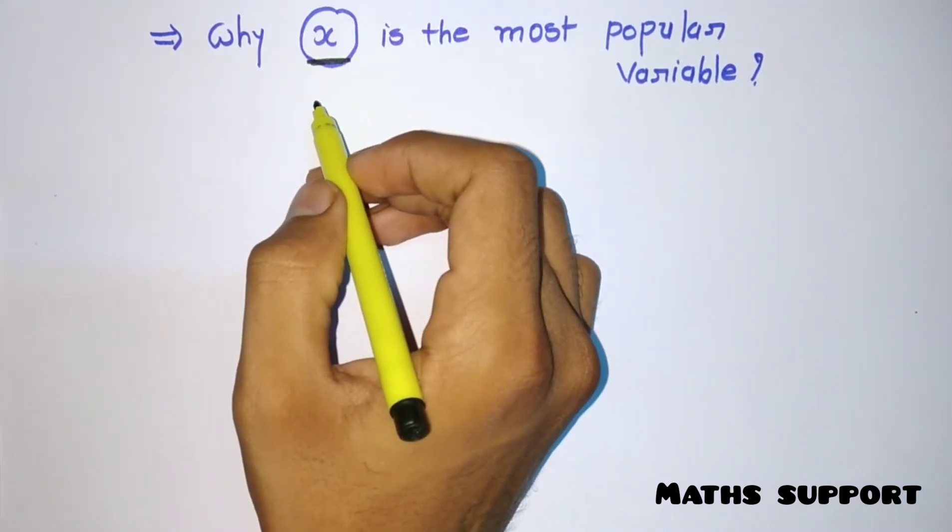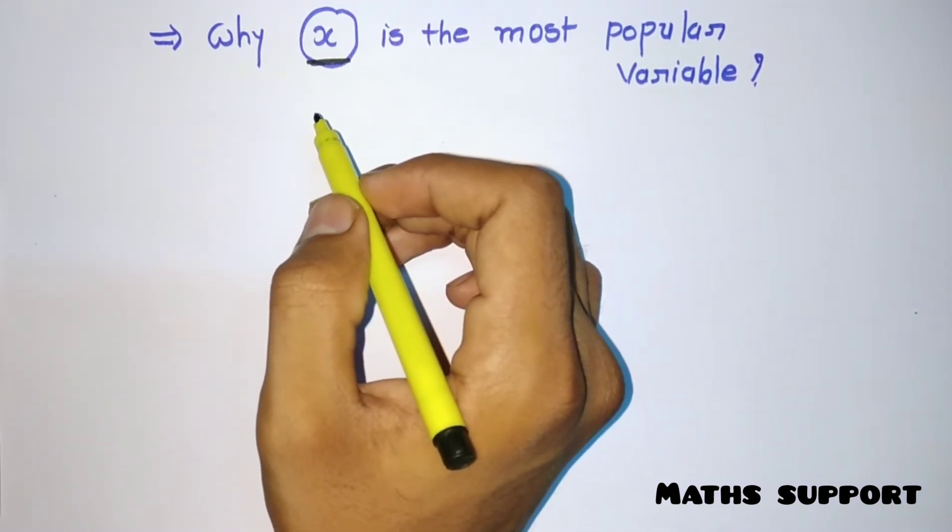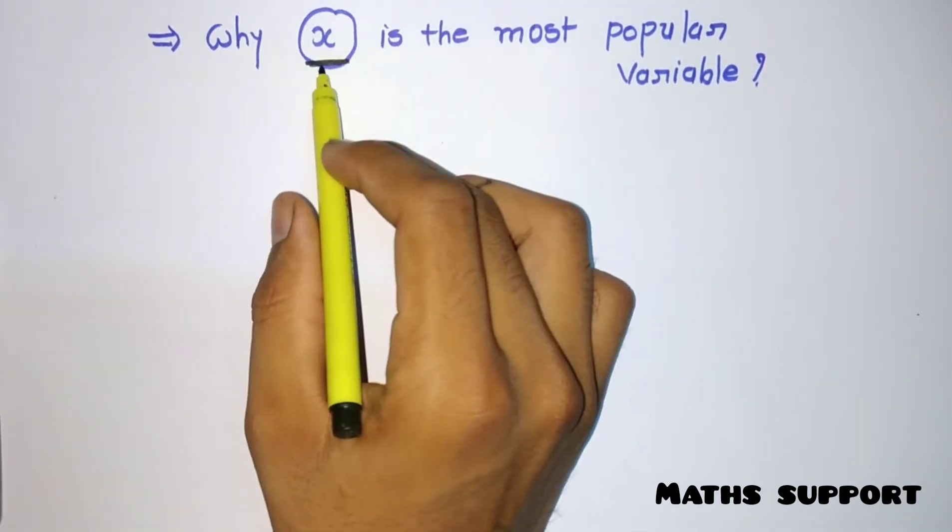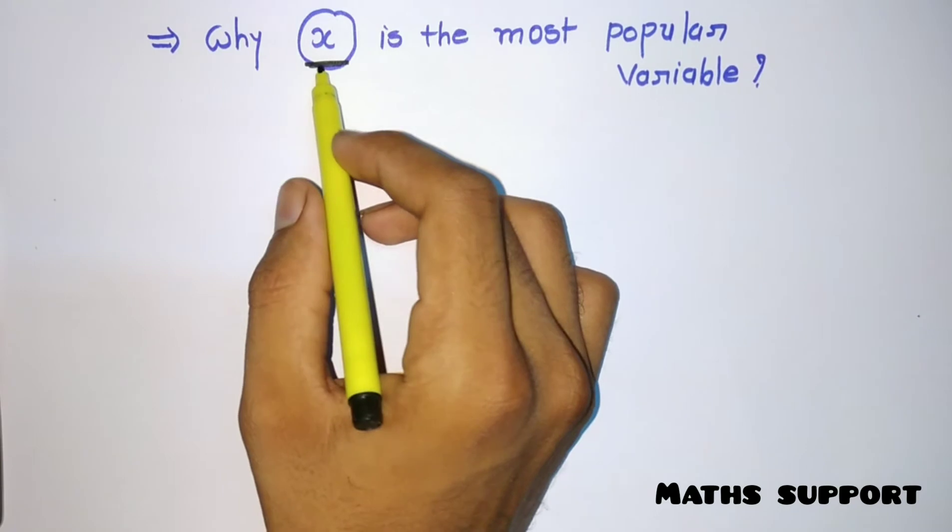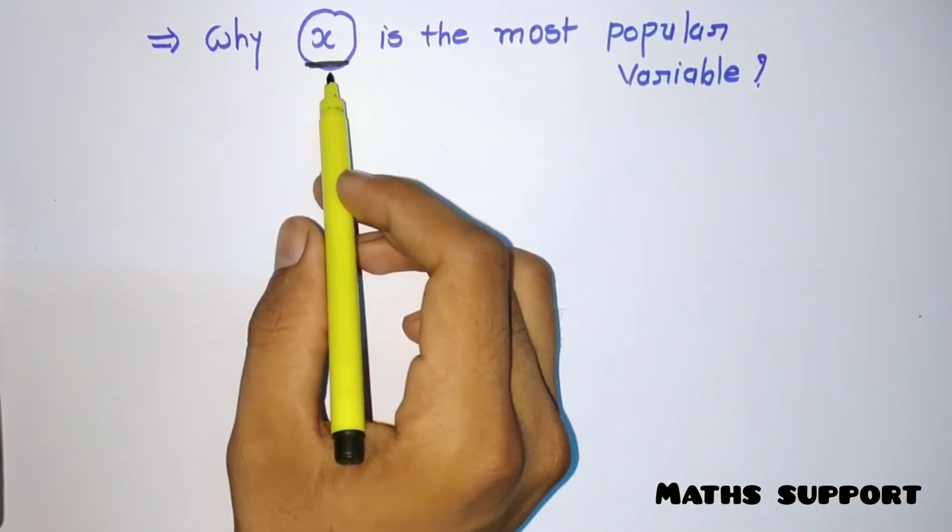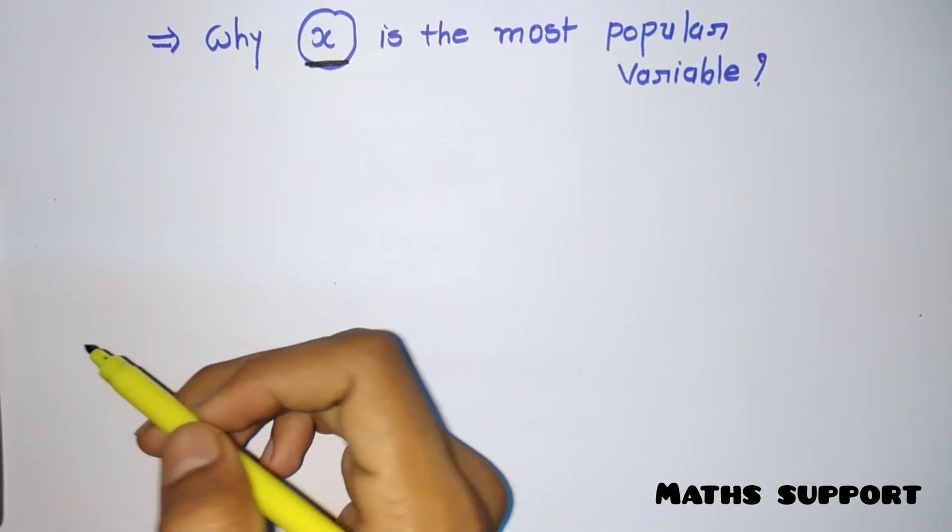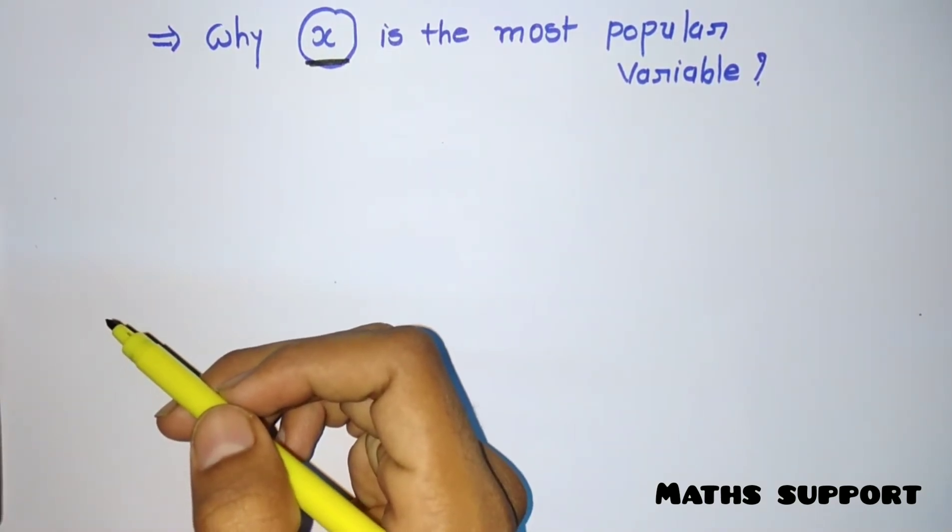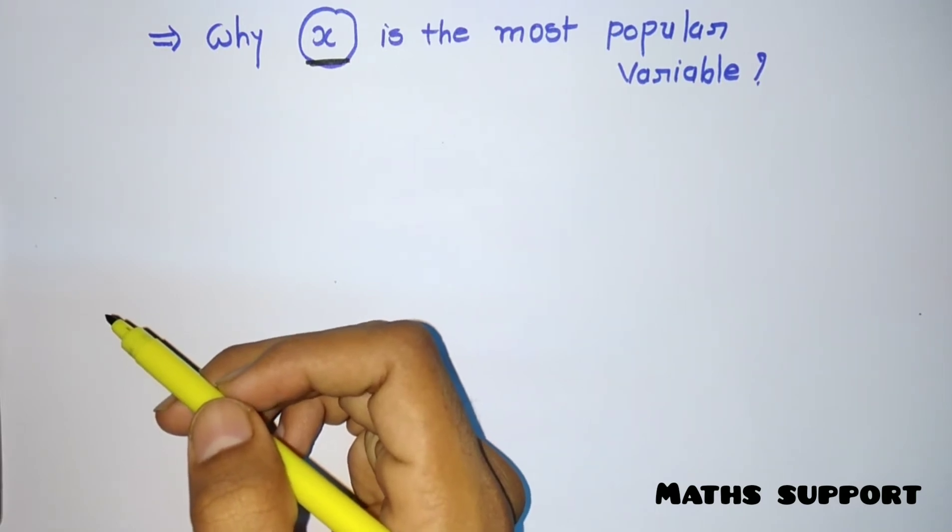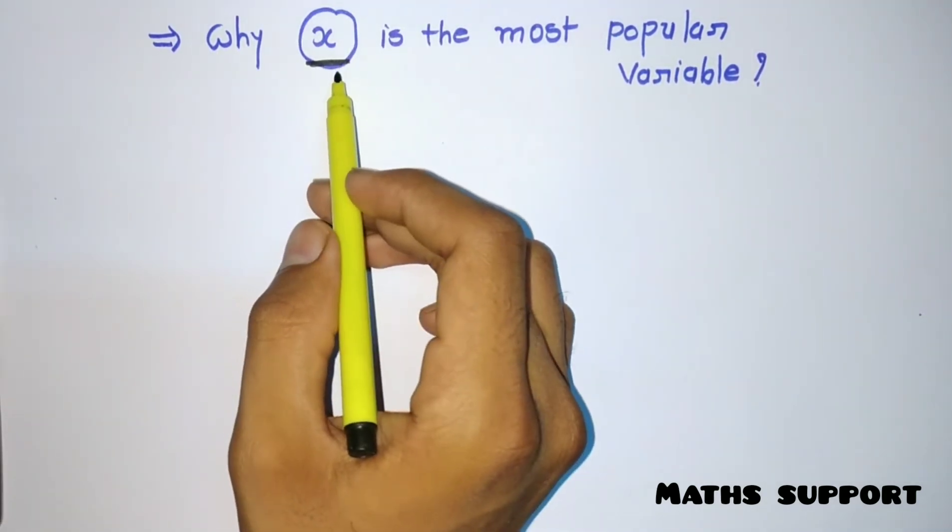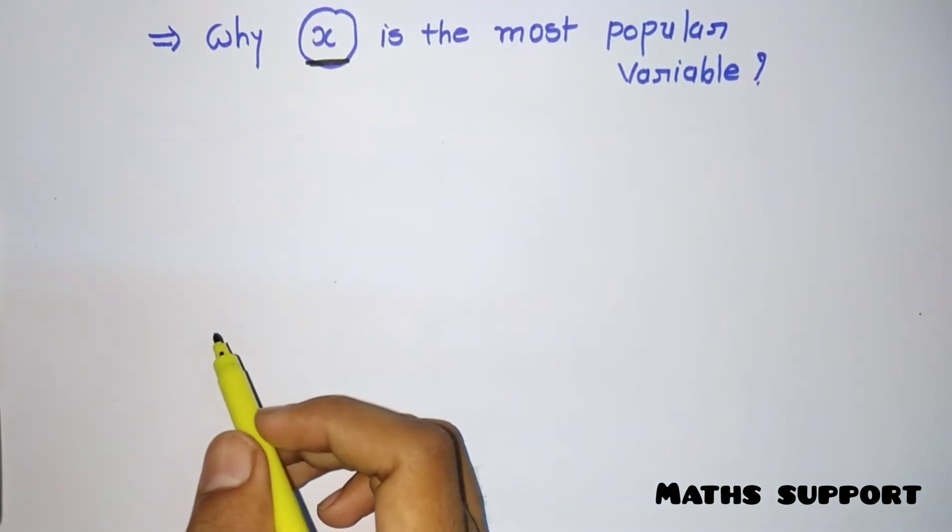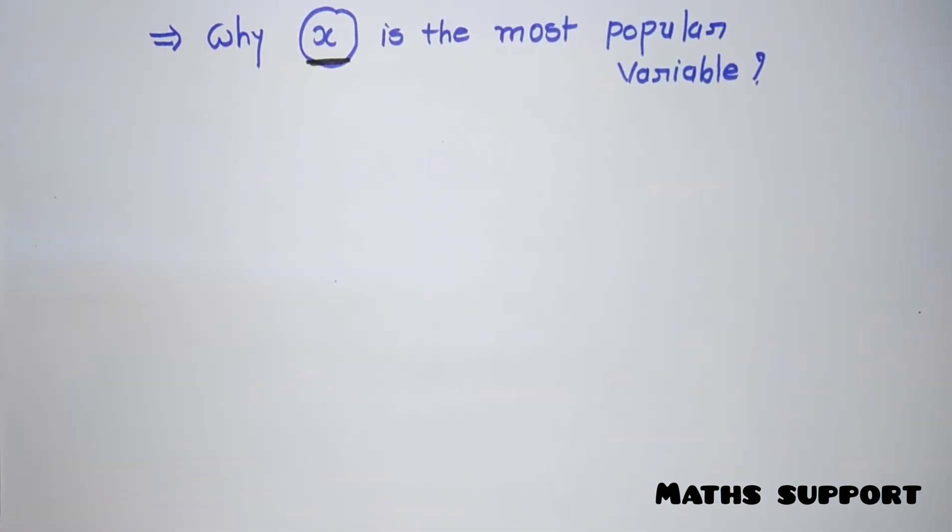But every time we prefer to select only X. So what's the basic reason behind it? If you ask some people why we're using X, they might answer that ancient mathematicians were using X, so we continue using it. But that's not the reason - there is a logical reason for it.